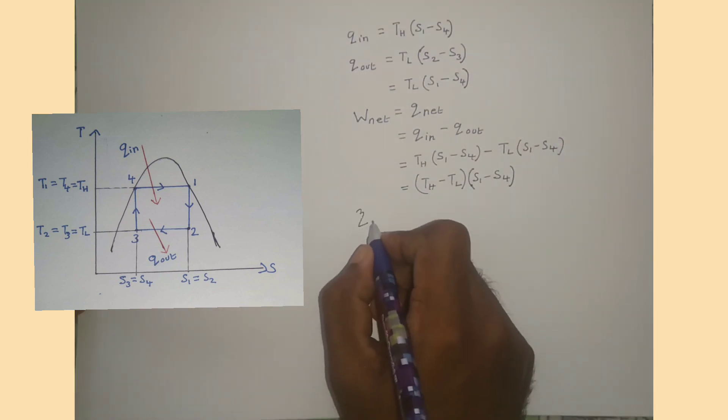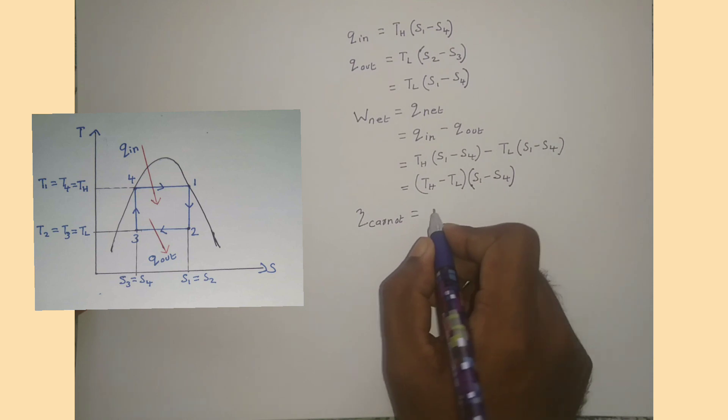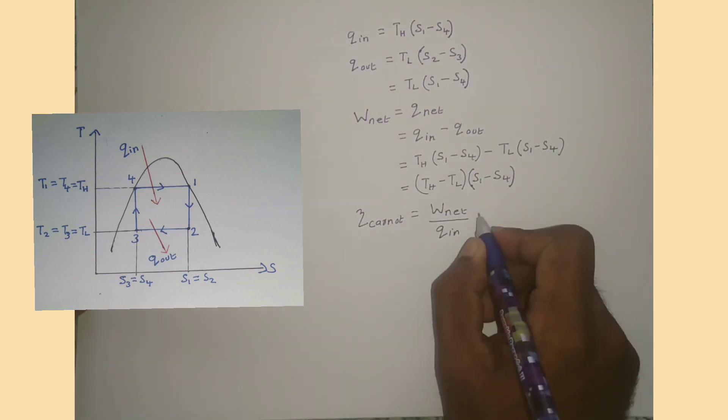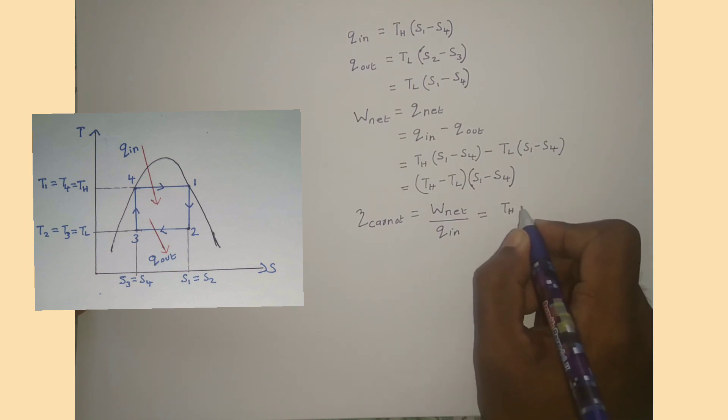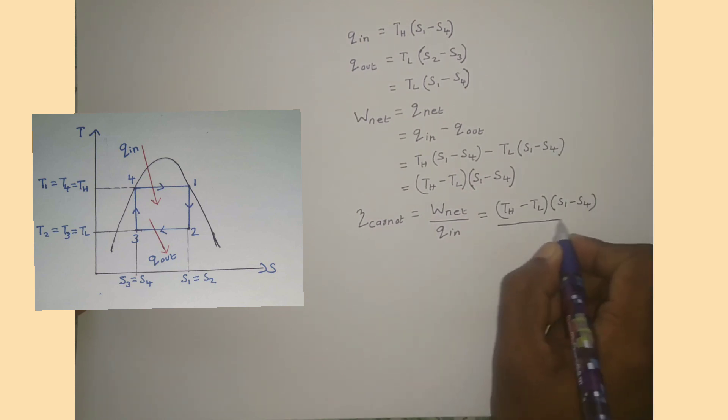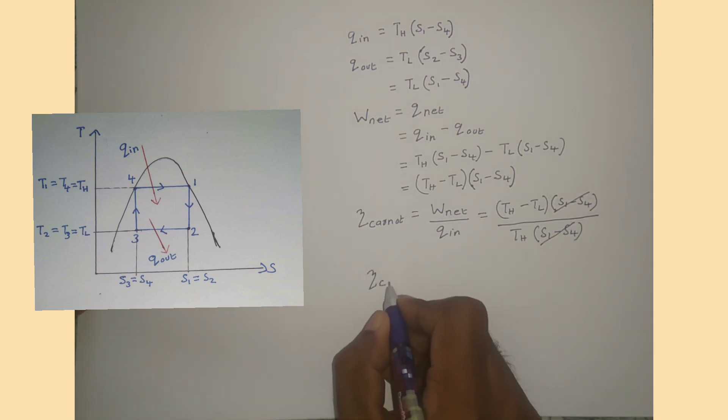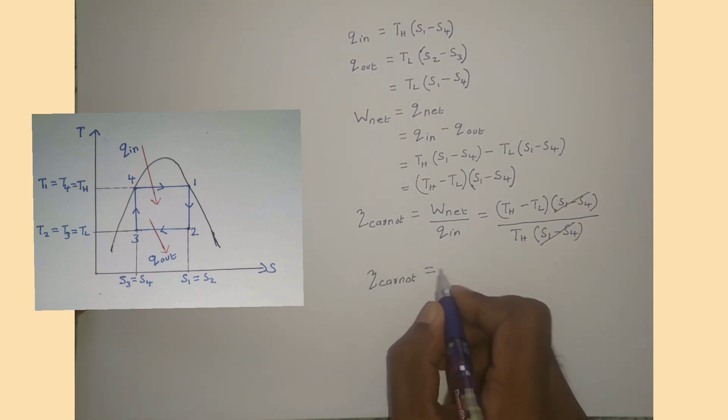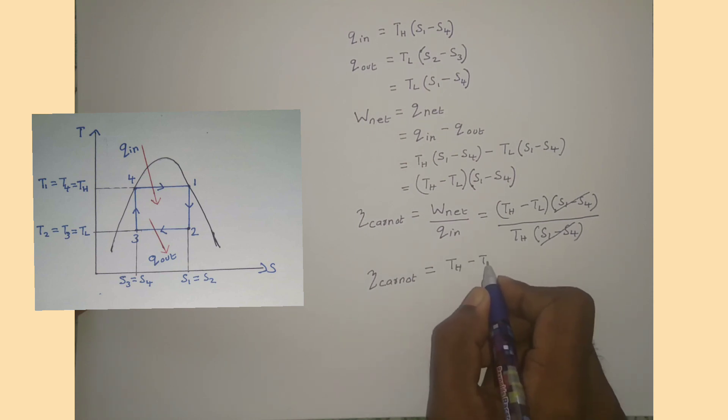Now, Efficiency Carnot equals W net divided by Q in. That is (TH minus TL) times (S1 minus S4) divided by TH times (S1 minus S4). S1 minus S4 cancels, and therefore Efficiency Carnot equals (TH minus TL) divided by TH.